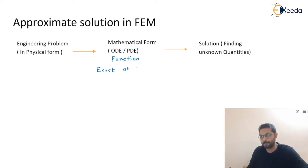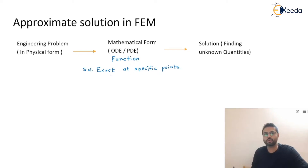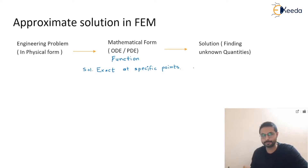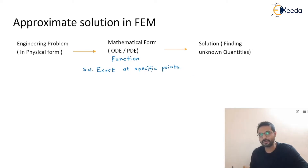But at some points it is only possible to find the exact solution at specific points or boundary conditions. It is not possible to find the exact solution all over the domain of the problem. If the boundary values are complex or the material properties are complex, in those cases we cannot find the exact solution at each and every point.